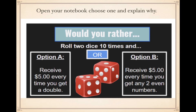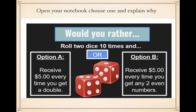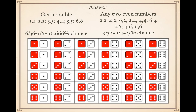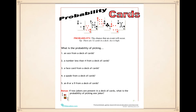The answer: for doubles you need one-one, two-two, three-three, four-four, five-five, or six-six — that's six chances out of 36, or 16.67 percent. For any two even numbers you have more options: two-two, four-two, six-two, two-four, four-four, six-four, two-six, four-six, six-six — nine out of 36, or 25 percent. So option B gives a slightly higher chance of winning — theoretically our chances are better with any two even numbers than with a double.